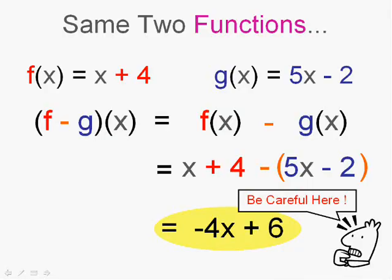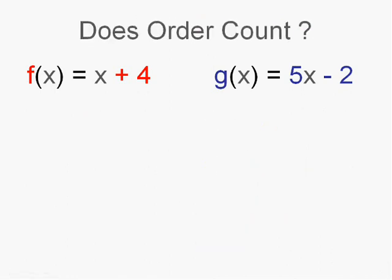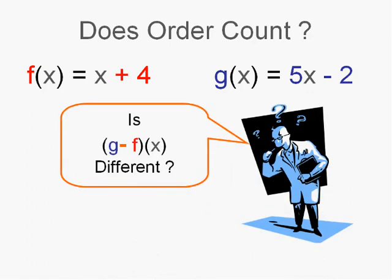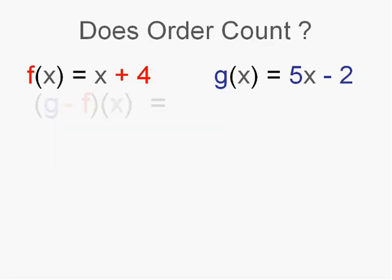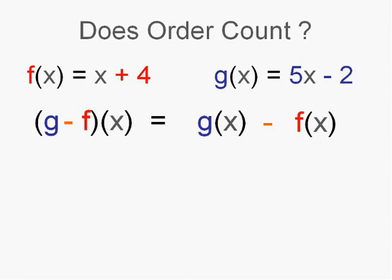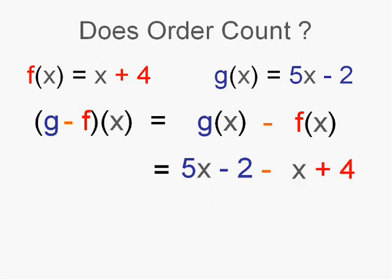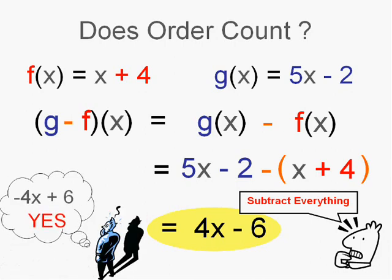Another thing to remember about doing subtraction: order does count. If we flip it around, g minus f of x is going to equal g(x) minus f(x). We're still going to want to use our parentheses. We'll have g(x), 5x minus 2, and we want to subtract the x plus 4. Let's simplify: 5x minus 1x is 4x, and negative 2 minus 4—be careful—your answer should be 4x minus 6. So you get different answers when you go g minus f of x than when you go f minus g of x.